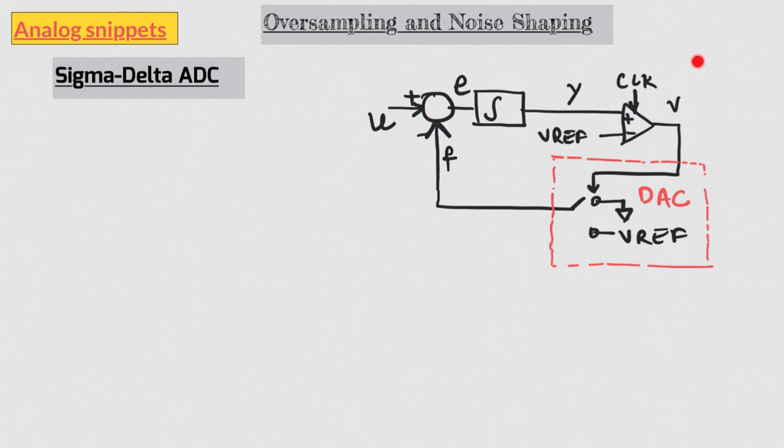So here we have our first order sigma-delta ADC. The clocked comparator is a 1-bit ADC. And feedback DAC is a simple switch which selects either between ground or VREF. For simplicity, let's set VREF to 1V and clock to 1Hz. Let's also assume that the subtraction and integration are discrete time operations.